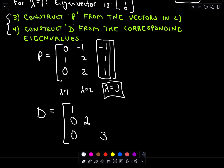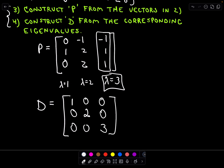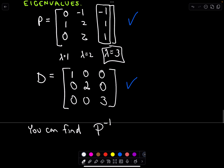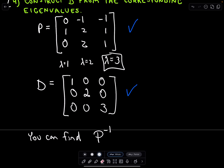We've now found P and D, and we've diagonalized our matrix. You can also find P inverse by finding the inverse of matrix P if needed. This turns out to be a very, very useful and important property in linear algebra.